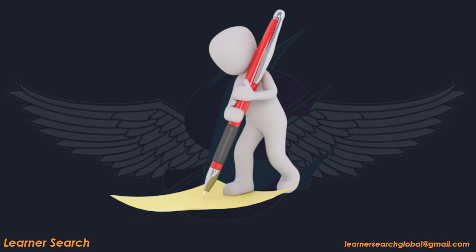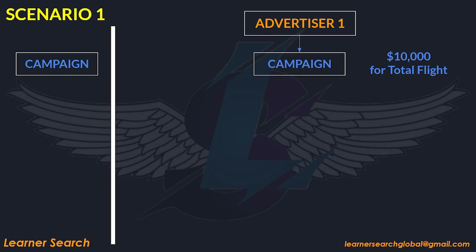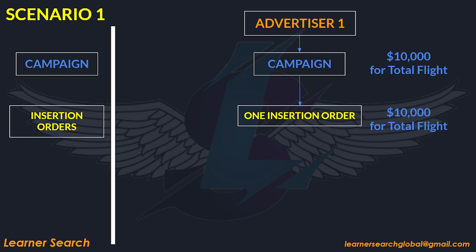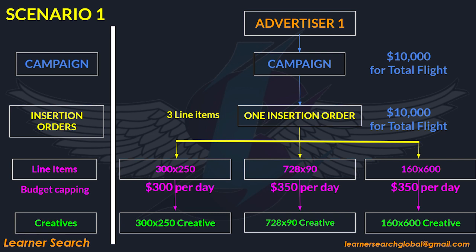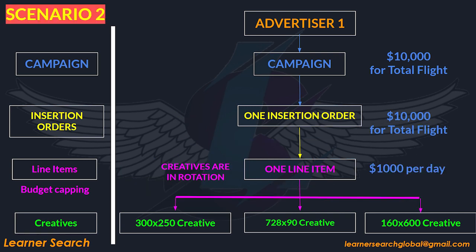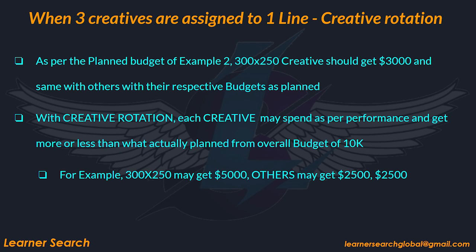I hope you got a sample campaign structure ready. Now we shall go through the first scenario in this example. Since this campaign is all about display, I am planning to run everything under a single IO. We shall create a single campaign, a single IO, and three line items which represent creative sizes, and assign respective creatives. With this structure, we can make sure that the planned budget for each creative size can be allocated strictly. In example 2, let's look at the second case. Instead of creating a separate line for each creative size, we will create a single line item for all three creatives and assign them to this line item. As per the planned budget, the 300x250 creative should get $3,000 and other creatives follow with their respective planned budgets. With creative rotation, each creative may spend according to their performance and receive more or less budget from the overall budget of $10,000.